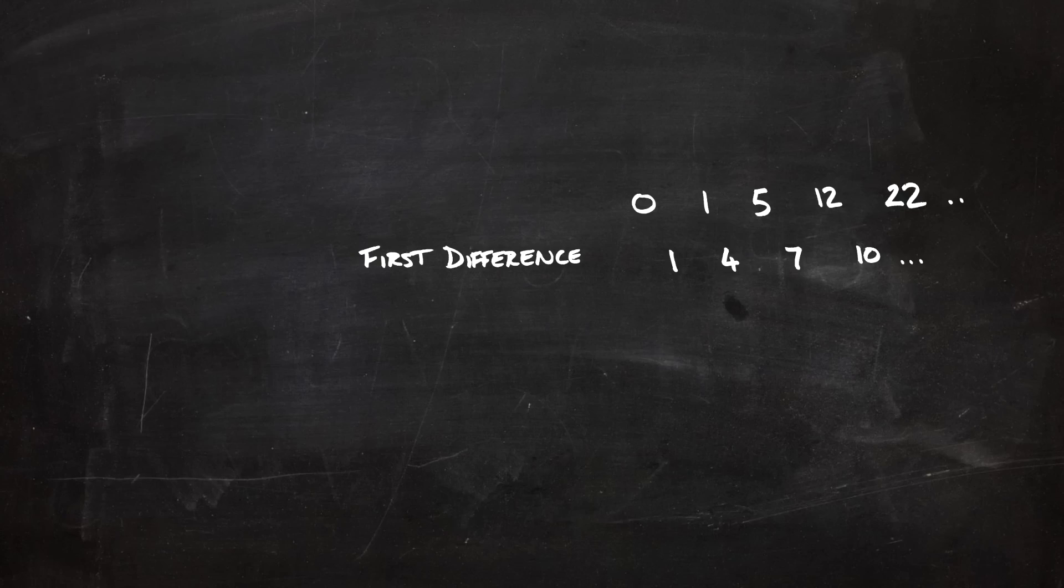Then we're going to do that again - we're going to take that sequence of differences and look at their differences. We'll get another sequence, we'll call that the sequence of second differences. And we keep going like this until we hit a constant. If we have a polynomial of degree n, then the nth difference will be a constant.